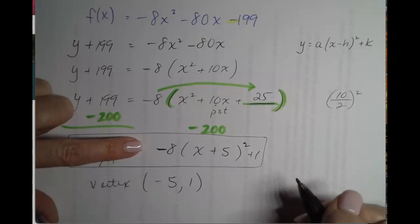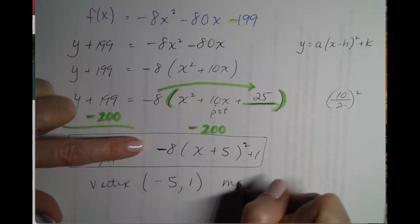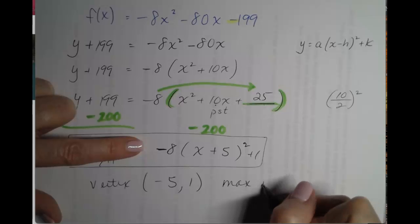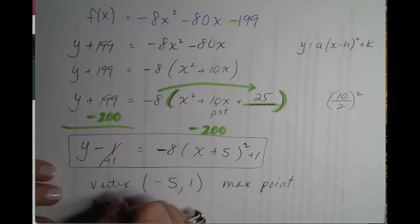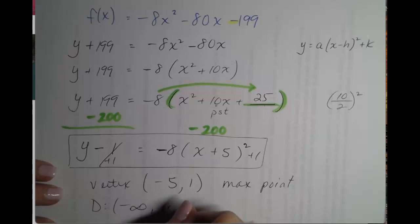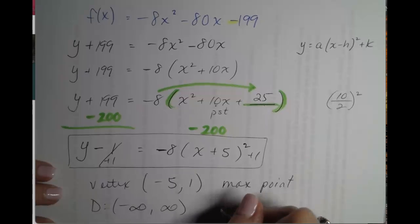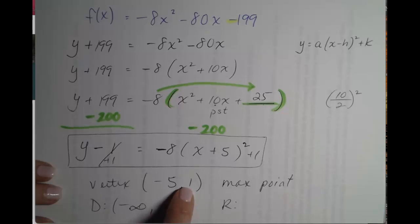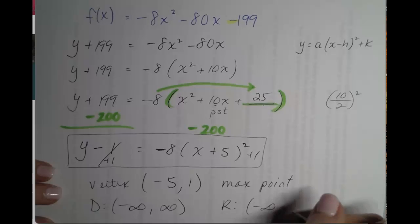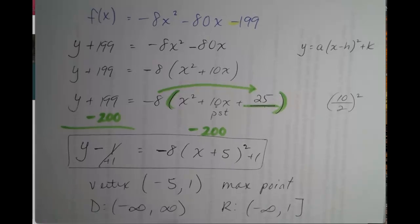The parabola is opening down. So this will be a max point of a vertex. Our domain is still all real numbers as it is for every parabola. Our range is going to be everything smaller than 1. So that is negative infinity to 1. There you go. Those are the steps in changing a quadratic form to a vertex form.